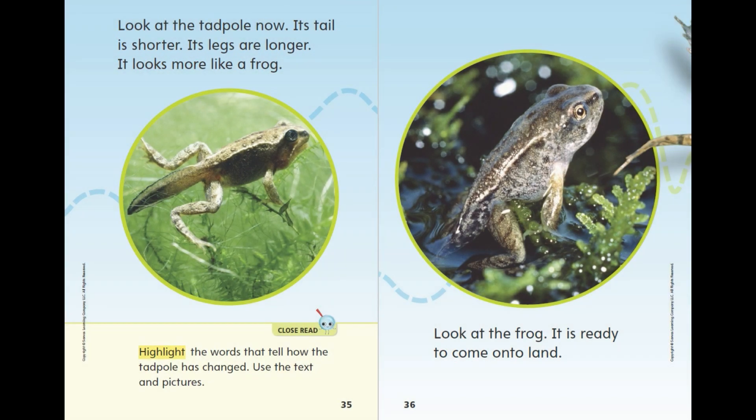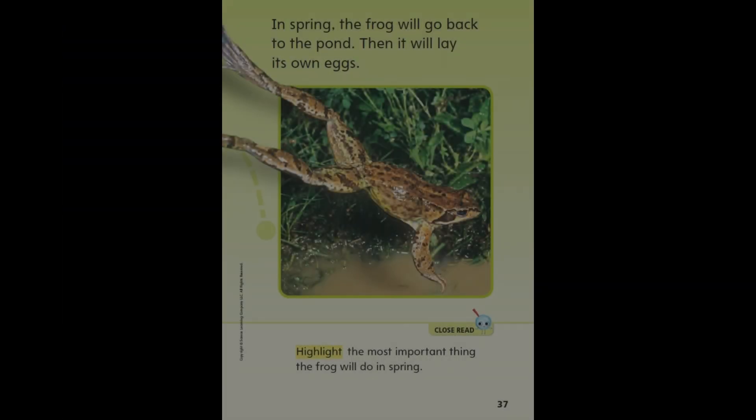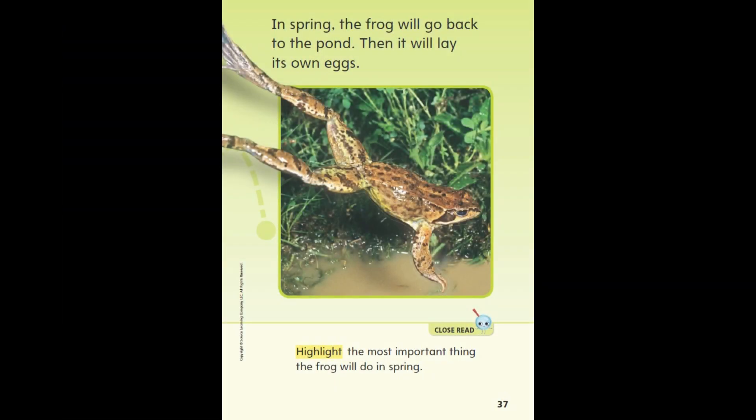Look at the tadpole now. Its tail is shorter. Its legs are longer. It looks more like a frog. Look at the frog — it is ready to come onto land. In spring, the frog will go back to the pond. Then it will lay its own eggs.